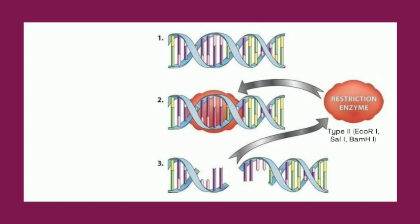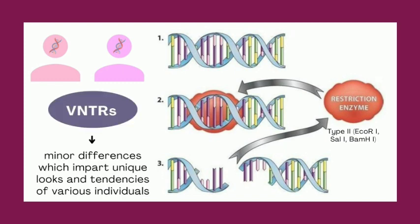Type 2 restriction enzymes like ECO-R1, SAL-1, BAMH1, etc. are used, which recognize their unique sites and cut within them in a specific pattern. Also referred to as RFLP analysis, this technique takes advantage of polymorphisms in every individual genome. Although the maximum genetic makeup of individuals of any species is identical, RFLP analysis entirely depends on the variable number of tandem repeats, or VNTRs, which are minor differences that impart unique looks and tendencies of various individuals in a population.